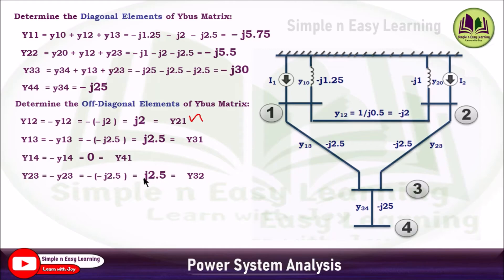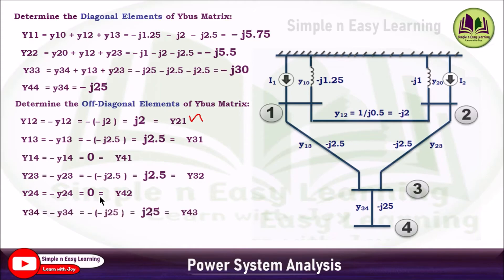For Y23 = -(-j2.5) = j2.5, which equals Y32. Y24 = 0 since there is no line between buses 2 and 4. Y34 = -(-j25) = j25, which equals Y43.